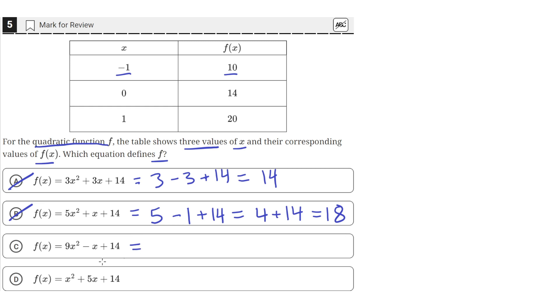Now let's check the third equation. 9 times negative 1 squared is just 9. Then minus negative 1, which is a positive 1, and then plus 14. This is equal to 10 plus 14, which is just equal to 24. So C is also incorrect, since we are supposed to get a 10 for f(x) when we plug in negative 1.